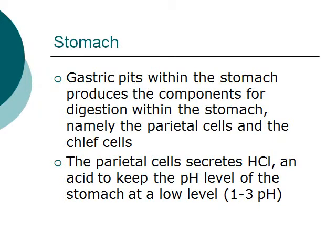The gastric pits within the stomach are essentially the most important part of the digestive system, producing the components for digestion within the stomach — namely the parietal cells and the chief cells. The parietal cells secrete HCl, or hydrochloric acid, which keeps the pH level of the stomach at a very low number, normally 1 to 3 pH.